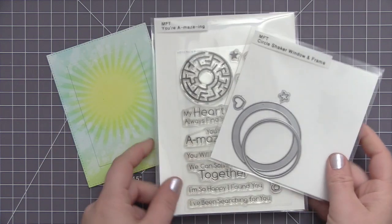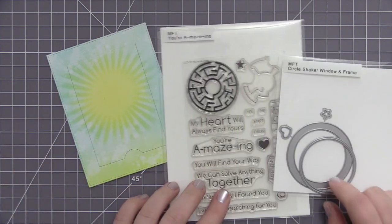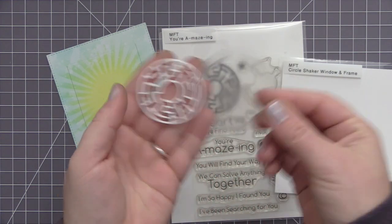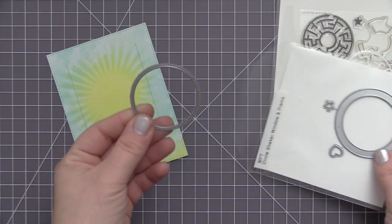Now to create the panel area that we're going to use to create the maze, I used the Blueprints 28 dies and I cut the panel using the large rectangle die there and it also has that kind of flap opening on the front. We're going to use that to open and close over top of our maze.